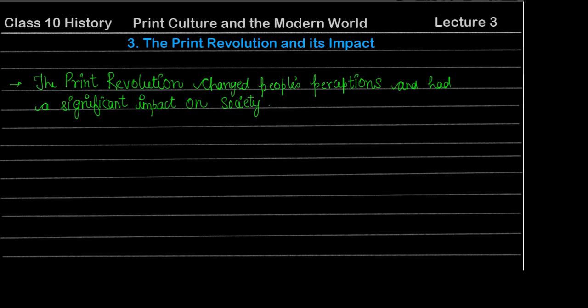Hello everyone and welcome back to my channel Interactive Education, running for the best education possible. Today we are going to discuss Class 10th History Chapter - The Print Culture and the Modern World, specifically the third unit: the Print Revolution and its impact. In the previous video we discussed how the Gutenberg Press came to Europe, book production increased, and how the transition from hand printing to mechanical printing was a big symbol of the print revolution. In this unit we will learn in detail about the broader social, political and economic impact.